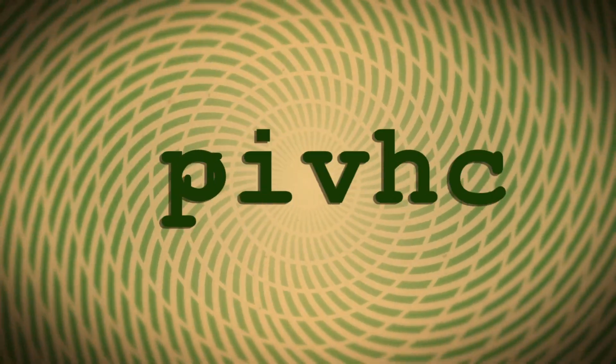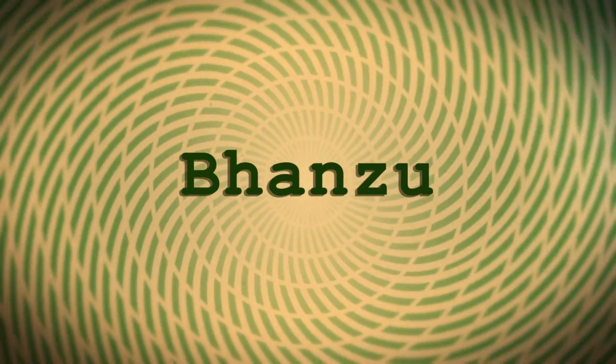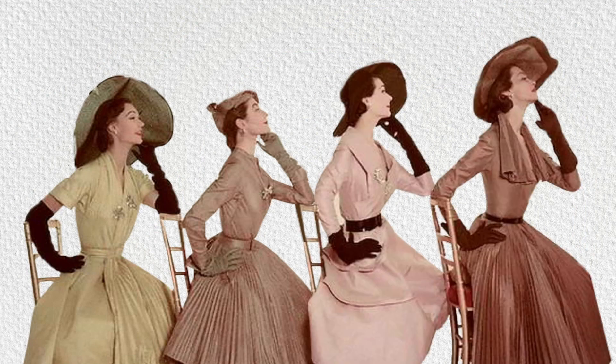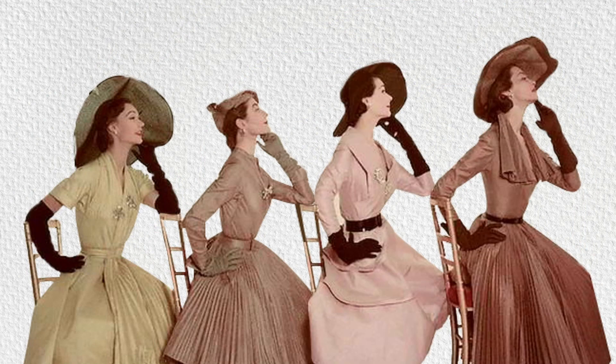This is how encryption works in today's digital world. All the information on the internet is essentially converted into a cipher to securely transmit between computers. While Caesar cipher might seem like a very old-fashioned cipher, almost every single data encryption algorithm of today stems from a similar idea.